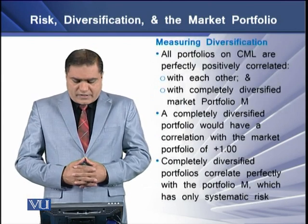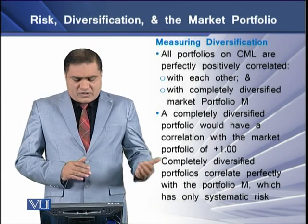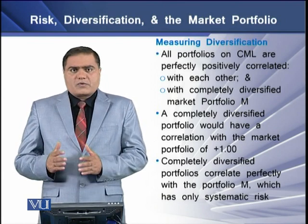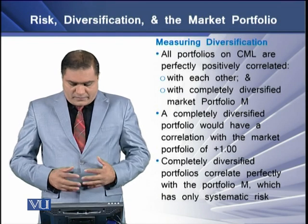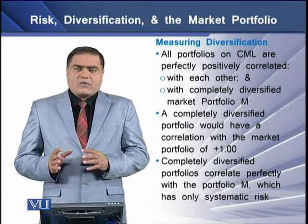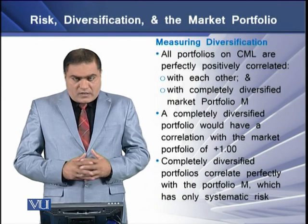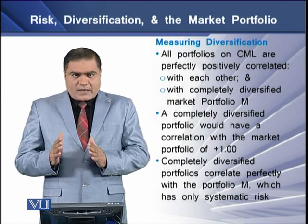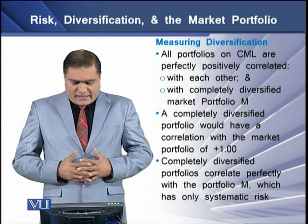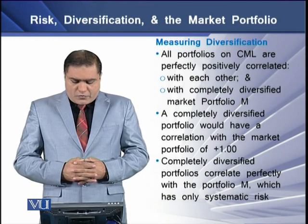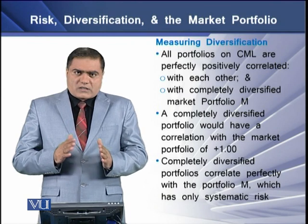To measure diversification, we note that all portfolios on the CML are perfectly positively correlated with each other and with the perfectly diversified market portfolio M. That is the basic feature of portfolios that lie on the CML. This means that a completely diversified portfolio would have a correlation with the market portfolio of plus one — meaning the returns on these two portfolios will move in the same direction. A completely diversified portfolio correlates perfectly with portfolio M, which means it has only systematic risk.